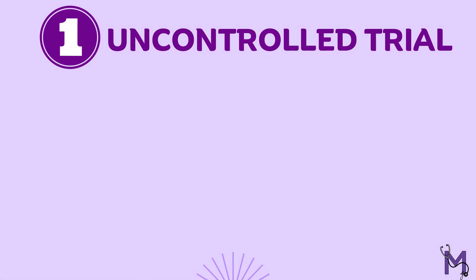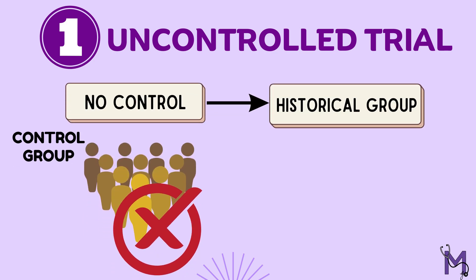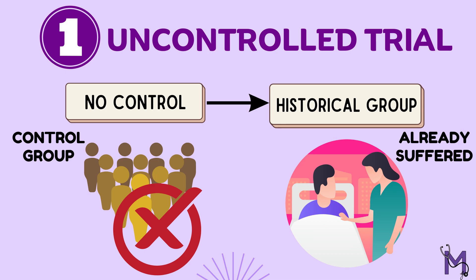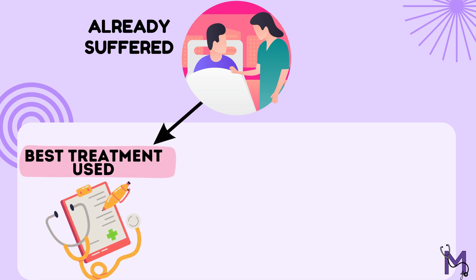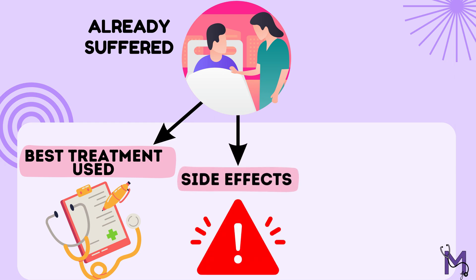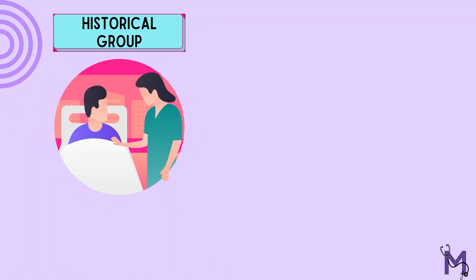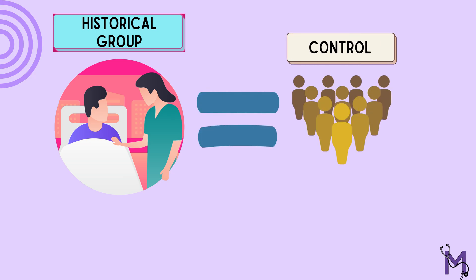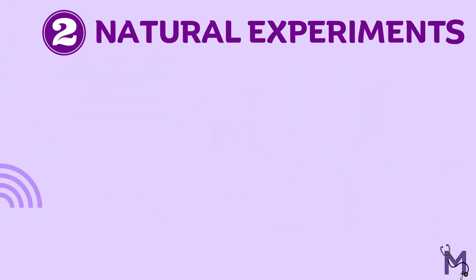Now let's discuss three examples of NRCTs for a better understanding. First is the example of uncontrolled trials. Here we won't use a control group, but instead we'll use historical controls — that is, people who have already suffered from the particular disease. Through these people we will find out which treatment measures they used, which one had the better response, and we can also find out the side effects and dosage of the other measures. Thus, in uncontrolled trials, people who have already had the disease will be our control group.